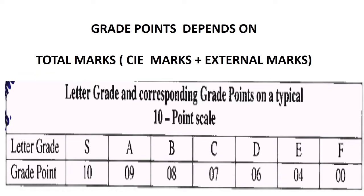Let's start with the basics: what do we mean by grade points and how should we assign them. Grade points depend upon the total marks, which is the sum of CI (continuous internal evaluation) marks plus external marks. Based on the total marks, we assign the letter grade and corresponding grade points in a typical ten-point scheme.